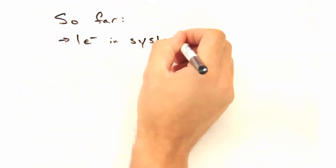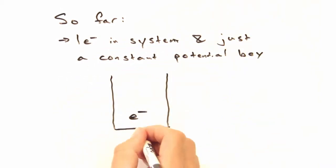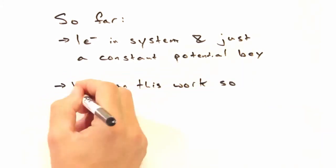So far, Eric, we've been assuming we only have one electron in our entire system, and it's just in a box. Isn't that a bit simple? So how can this model work so well for solids?